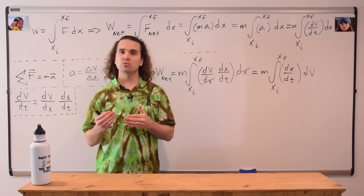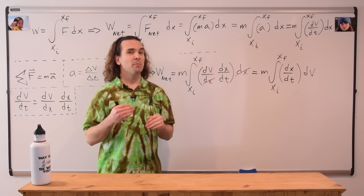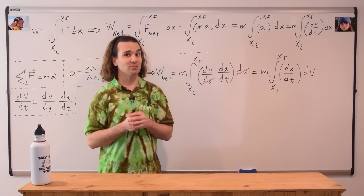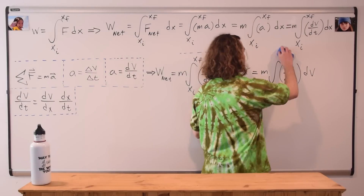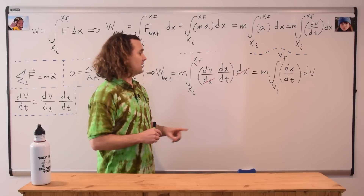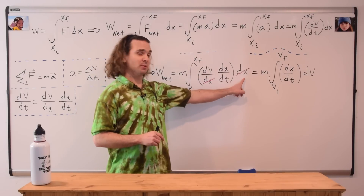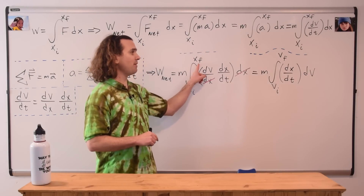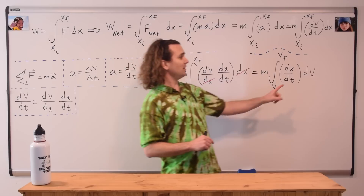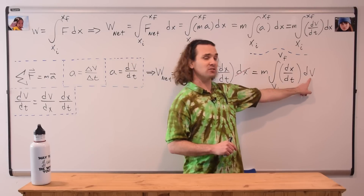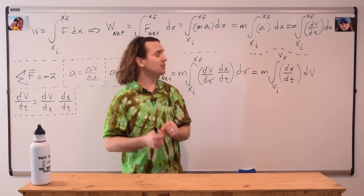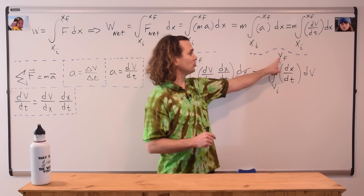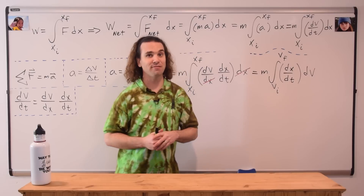Notice what we need to do to our limits because we've changed what we're taking the integral with respect to. We were taking the integral with respect to position, so we went from position initial to position final, but now because we're taking the integral with respect to velocity, our limits have changed. We're taking the integral from velocity initial to velocity final.